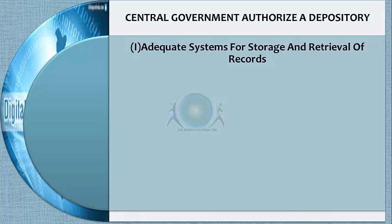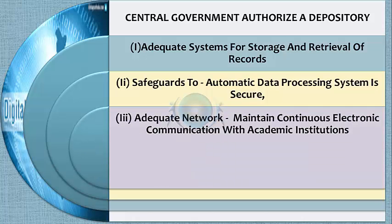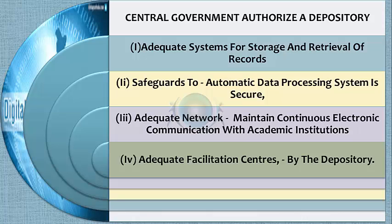The central government must be satisfied that there are adequate systems for storage and retrieval of records from the national database, safeguards to ensure the automatic data processing system is secure, an adequate network for continuous electronic communication with academic institutions and other bodies, and adequate facilitation centers established by the depository to provide these services.